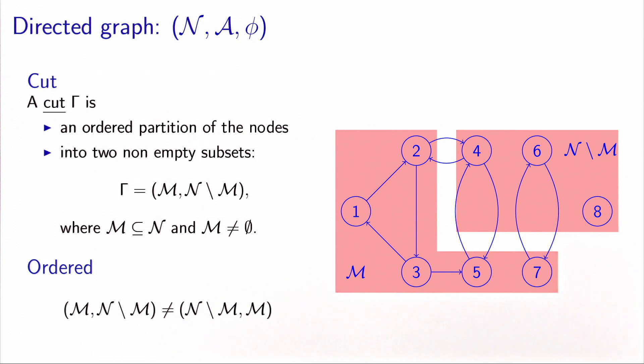What we mean by ordered partition of the nodes is that the cut defined by the set M equals one, two, three, five, seven, and four, six, eight. So this is the cut which is represented on this picture.